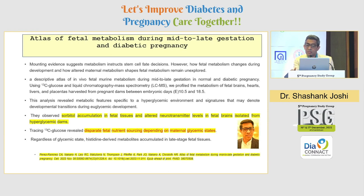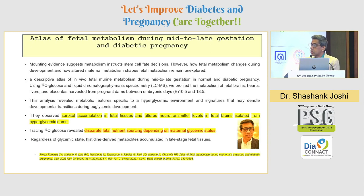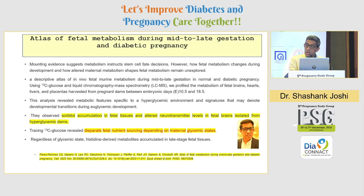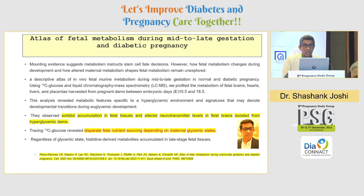This entire analysis reveals a state of hyperglycemic environment and various signatures which tell us developmental transitions during euglycemic development. They observed that sorbitol accumulates in fetal tissues, and that alters neurotransmitters in fetal brains from these hyperglycemic dams. Using these tracers, they look at the discordance between fetal nutrient sourcing based on glycemic status. Another important finding from this study is that independent of the glucose state, histidine-derived metabolites accumulate in the late-stage fetal tissues.